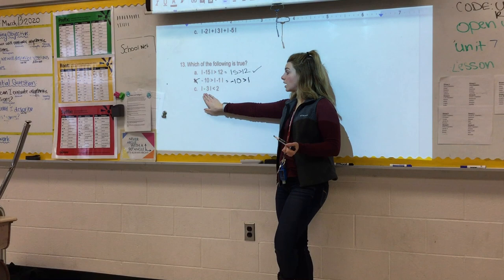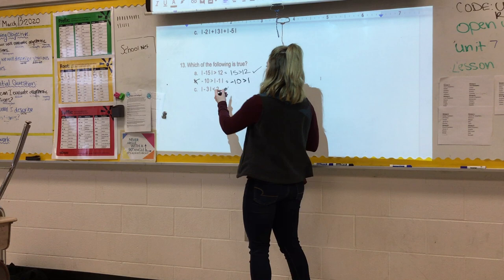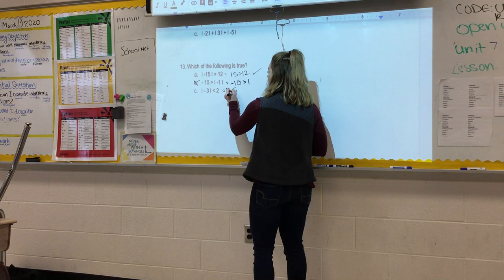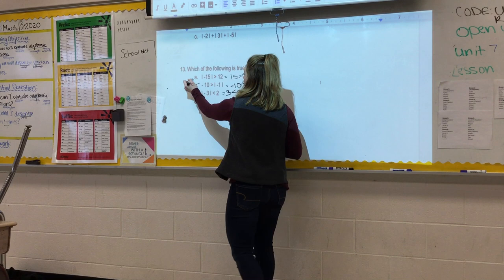So then this says negative 3, the absolute value is less than positive 2. So that is saying absolute value of negative 3 is just 3 is less than 2. Does that make sense? Nope. So we know that A is our only correct answer here. Any questions? Good on that one.